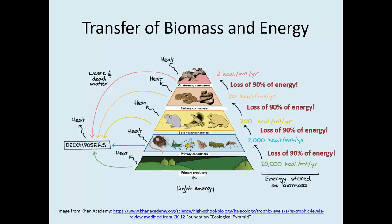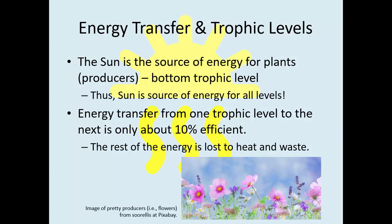So it's not a very efficient process. To summarize: the sun is the source of energy for plants, which are the producers at the bottom trophic level, and thus the source of energy for all life on earth. Energy transfer from one trophic level to the next is only about 10% efficient — we lose 90% due to heat and waste. One exception to this rule is ecosystems very deep in the ocean, where some ecosystems are powered by alternative energy sources, but those are pretty rare and definitely an exception.